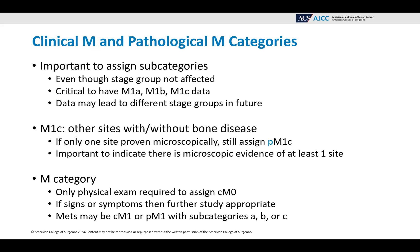Clinical M and Pathological M categories. It is important to assign the subcategories. Even though the stage group is not affected, it is very critical to have the M1A, M1B, and M1C data. This data may lead to different stage groups in the future. M1C covers other sites with or without bone disease. If only one site is proven microscopically, you still assign PM1C — it is important to indicate there is microscopic evidence of at least one site.